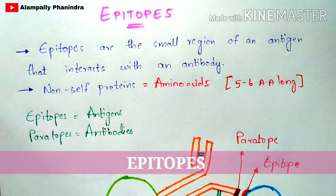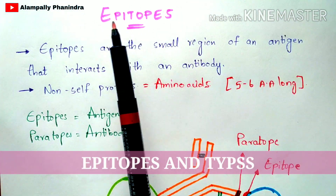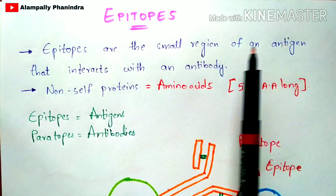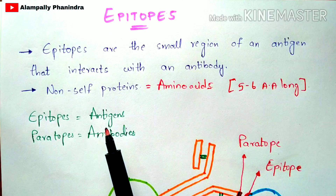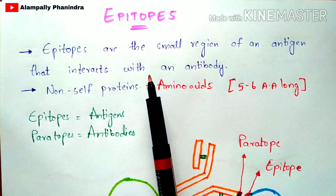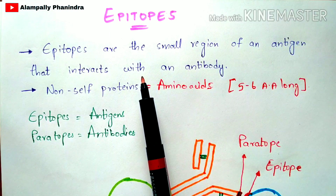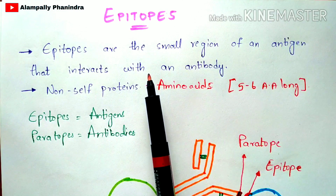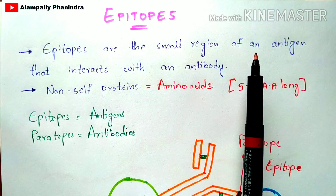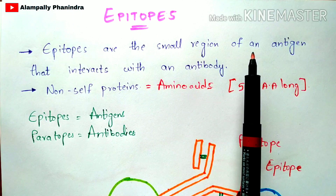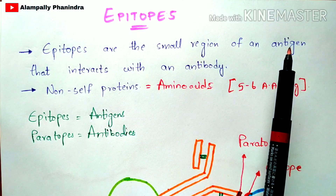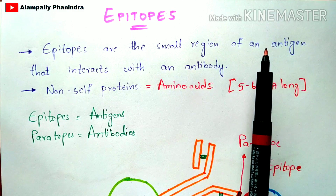In this video, let us discuss about epitopes in detail. Epitopes are the small regions of an antigen that interact with the antibody. To understand this, you should know about antigen-antibody interaction. Antigens are foreign substances which enter into your body from the external environment, and these antigens are harmful, causing infection to human beings.